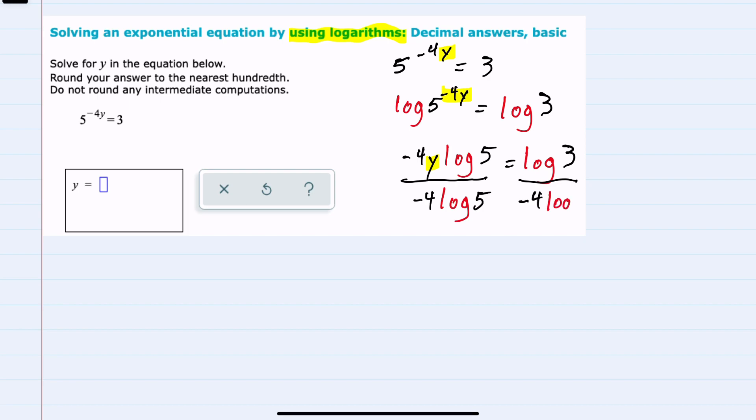On both sides, to cancel everything on the left except our variable y. And then we need to make this calculation rounding to the nearest hundredth and without rounding prior to getting the final solution.